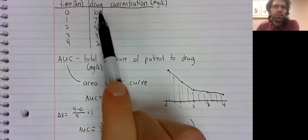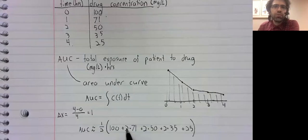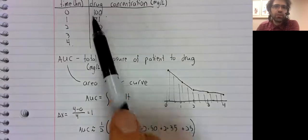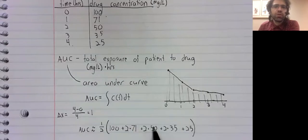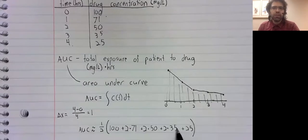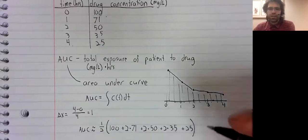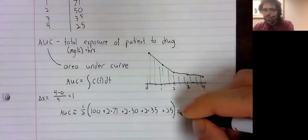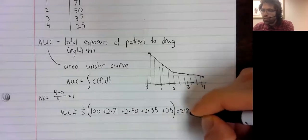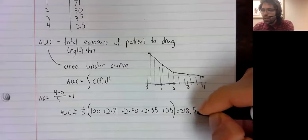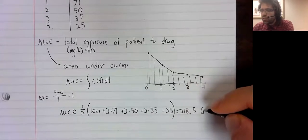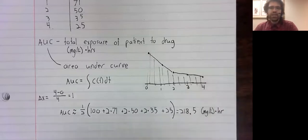It's delta x divided by 2 times the first value, plus 2 times the second value, plus 2 times the third value, plus 2 times the fourth value. The last value does not get a 2 in front of it. And we put this into our calculator, and we get 218.5.